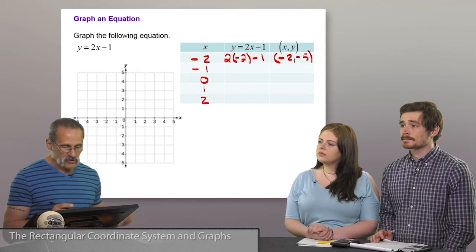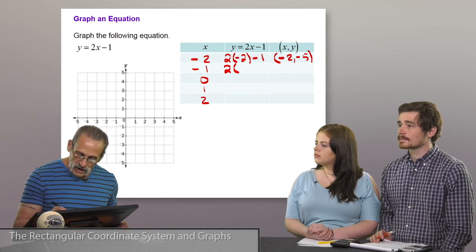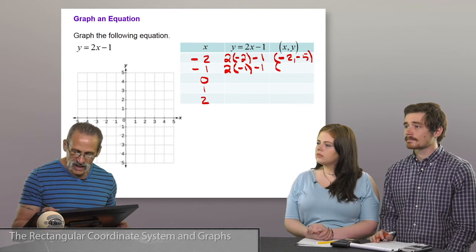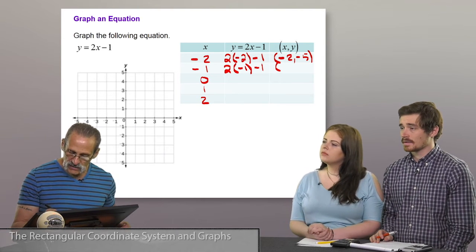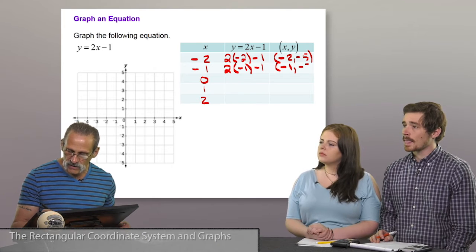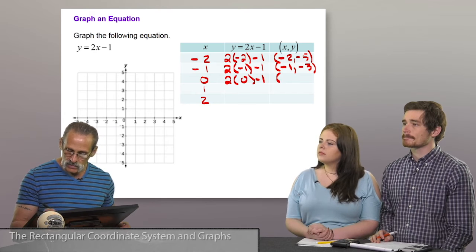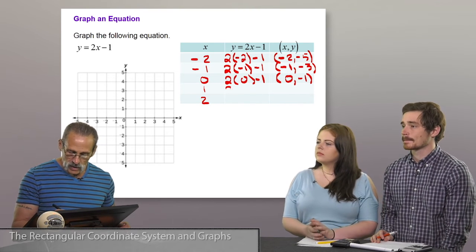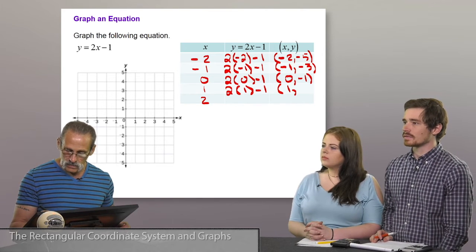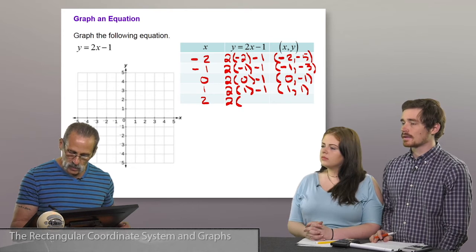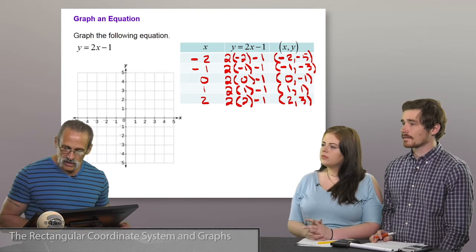So when x = −1, the corresponding y value is −3. When x = 0, y = −1. When x = 1, y = 1. And when x = 2, y = 3. Those are the points we're going to plot.